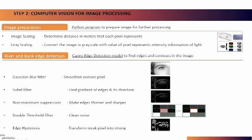In the next step, we used computer vision to find river edges and bank lines by first converting the image into grayscale, and then applying the Canny edge detection algorithm, which includes a Gaussian blur filter, Sobel filter and edge hysteresis.